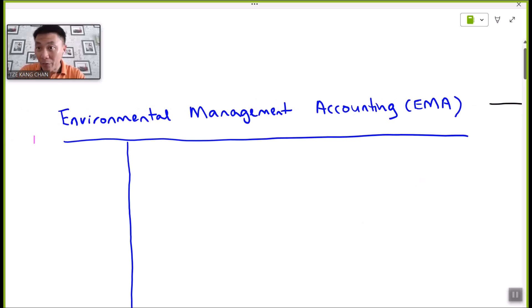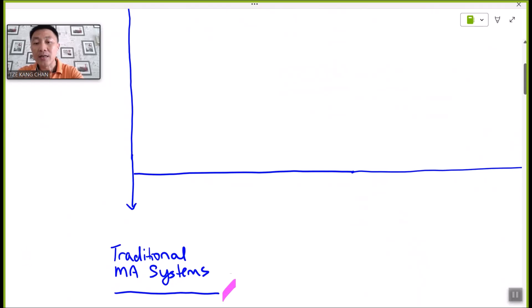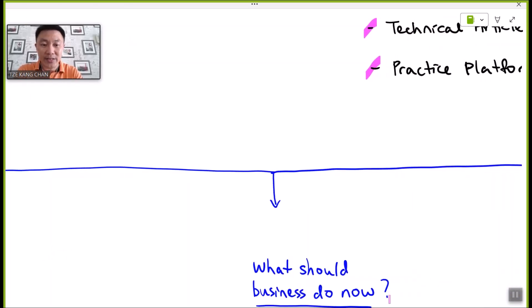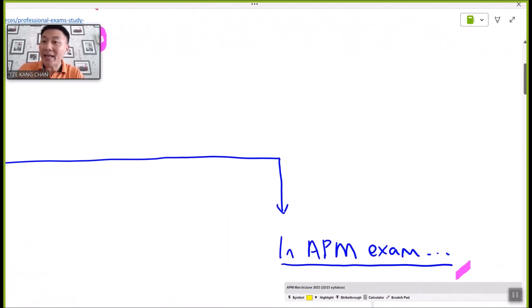In this part of the video, we will first discuss the fundamentals of traditional management accounting systems adopted by most business organizations. Then, it tells us what businesses should do now, given the deteriorating physical living environmental conditions nowadays. Thirdly, how would these topics be tested and appear in the APM examination?